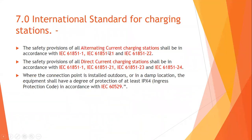Rule 7 covers international standards for charging stations. The central government is largely depending on international standards while the Bureau of Indian Standards continues research. For AC charging stations, IEC 61851-1, IEC 61851-21, and IEC 61851-22 shall be followed. For DC charging stations, IEC 61851-1, IEC 61851-21, IEC 61851-23, and IEC 61851-24 shall be used.